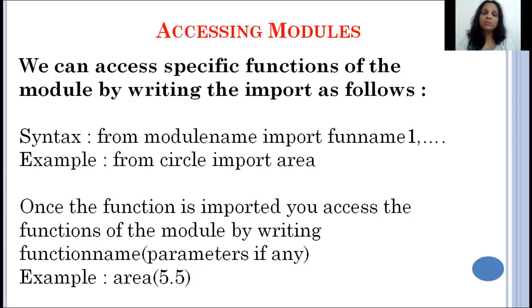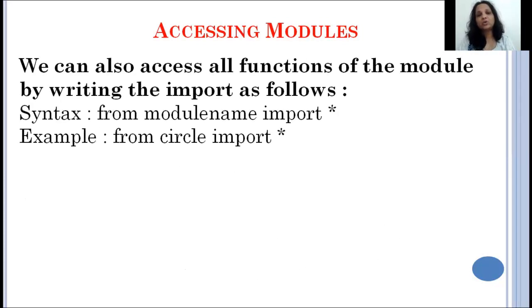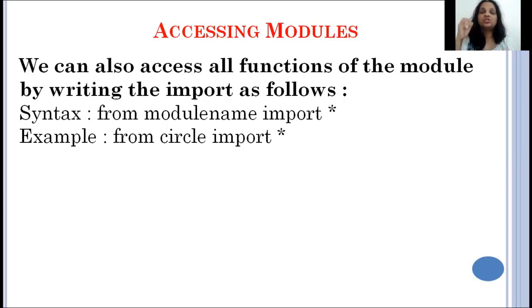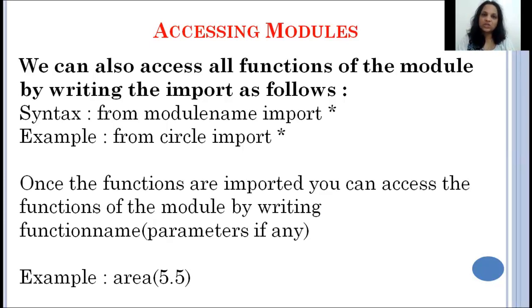Suppose you want to import all functions of a module but not import the module name itself. You could write from circle import * — the asterisk means import all the functions. The functions in the circle module are area and circumference. Since we did not import circle itself, only the function names come into our current namespace, and you can directly access them as area or circumference as shown in the last statement.